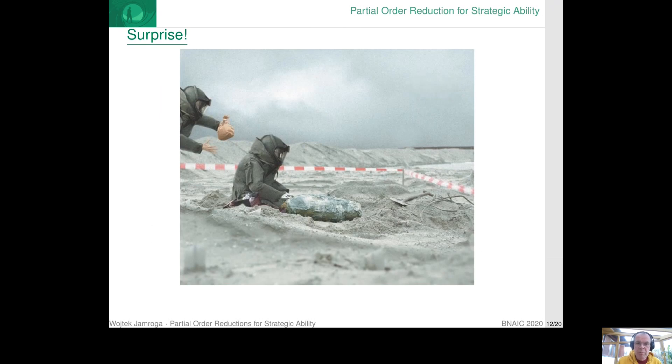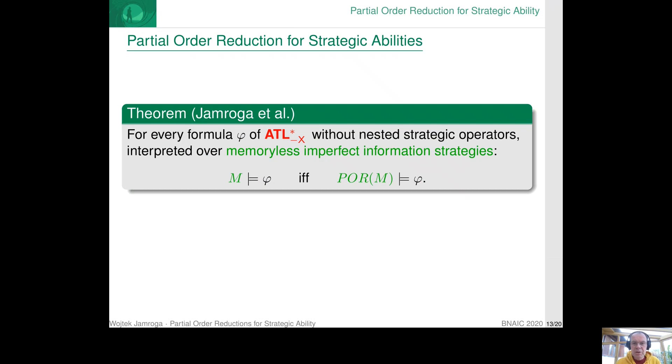But the big news that we proved is that actually exactly the same reduction as for LTL without next is sufficient also for ATL without next, interpreted over memoryless imperfect information strategies.